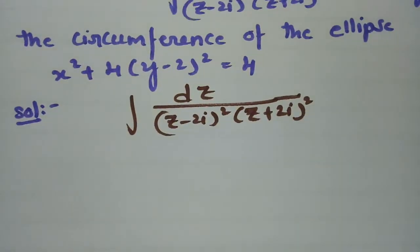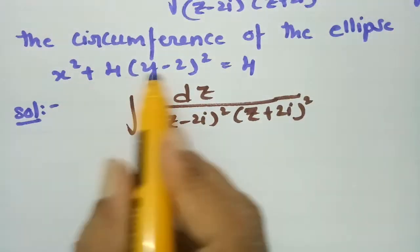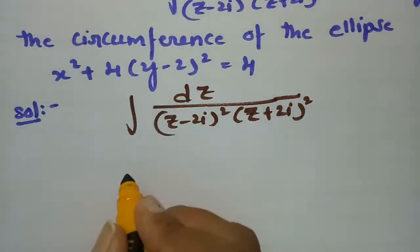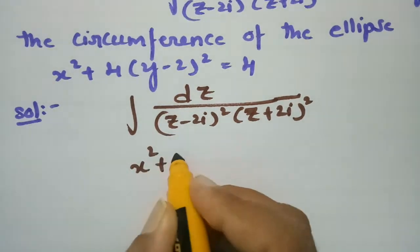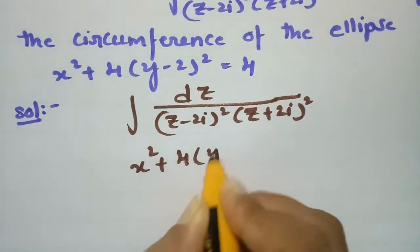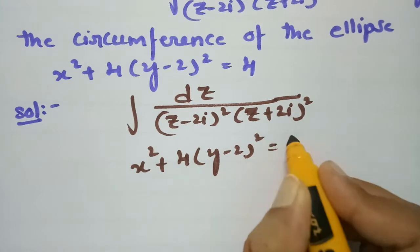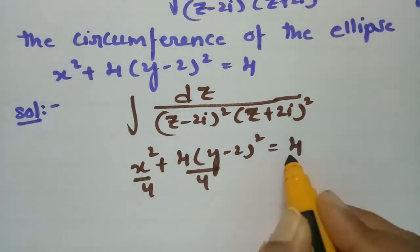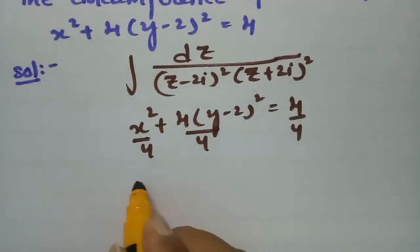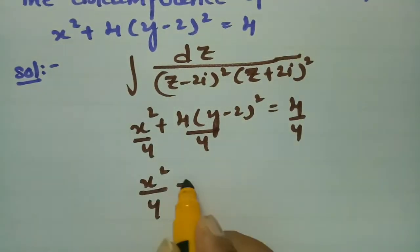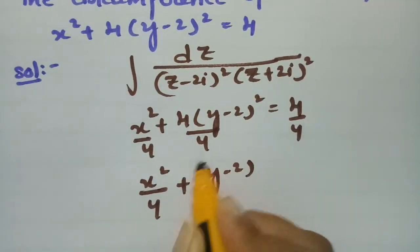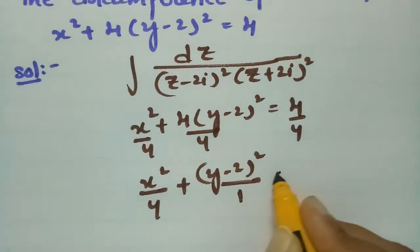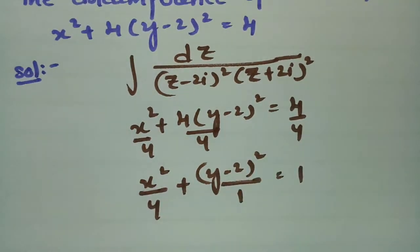The contour c is given as x squared plus 4 times (y minus 2) squared equals 4. If I divide throughout the equation by 4, this becomes x squared by 4 plus (y minus 2) squared by 1 equals 1. So this is the equation of an ellipse.